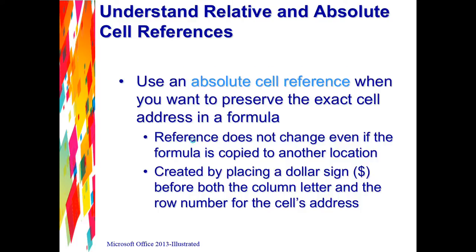On the opposite side, there is an absolute cell reference, which you use when you want to preserve the exact cell address in the formula. There are times when you want Excel to retrieve formula information from a specific cell and you don't want the cell address to change when you copy it to a new location. For example, you might have a price in a specific cell you want to use in all your formulas regardless of location. If you use relative cell referencing, the formula results would be incorrect because Excel would use a different cell every time.